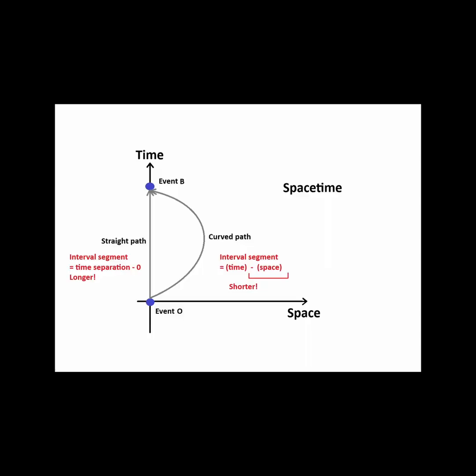But why does the curved path look longer on a space-time diagram if it's actually shorter in space-time? It's because the diagram is an illusion. We can't properly represent space-time lengths in Lorenz geometry on a flat piece of paper.